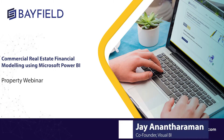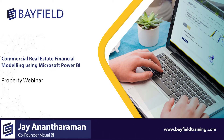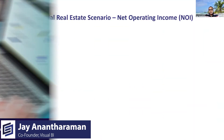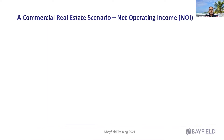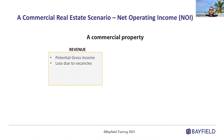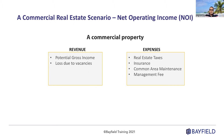For today, we are going to take up a very simple and straightforward scenario for commercial real estate. We are going to calculate net operating income for a commercial property. In the equation, we're going to have some revenue line items and some expense line items. We're going to see how to pass some of the values to the Power BI model, calculate some intermediate KPIs, and finally subtract expenses from revenue to arrive at net operating income.